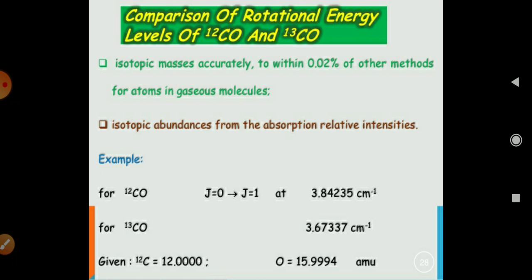So, the given what we have, we have changed 0.02%. So, for 12 carbon, we have 12.000 and for oxygen, it is 15.9994 AMU, the rotational energy levels.